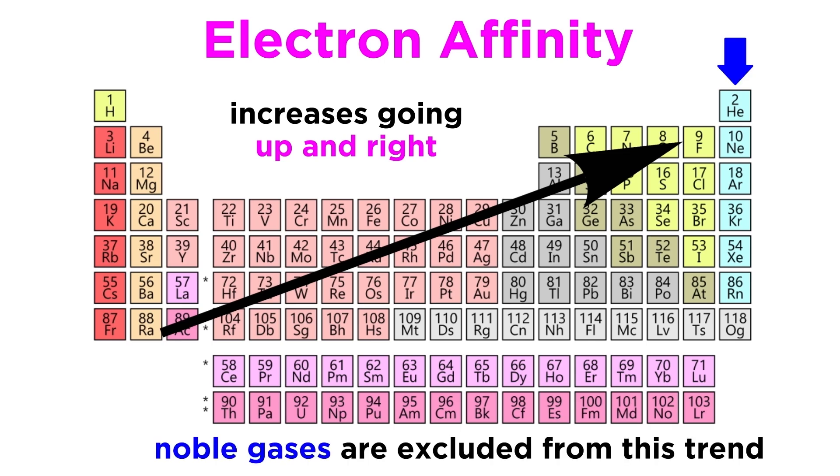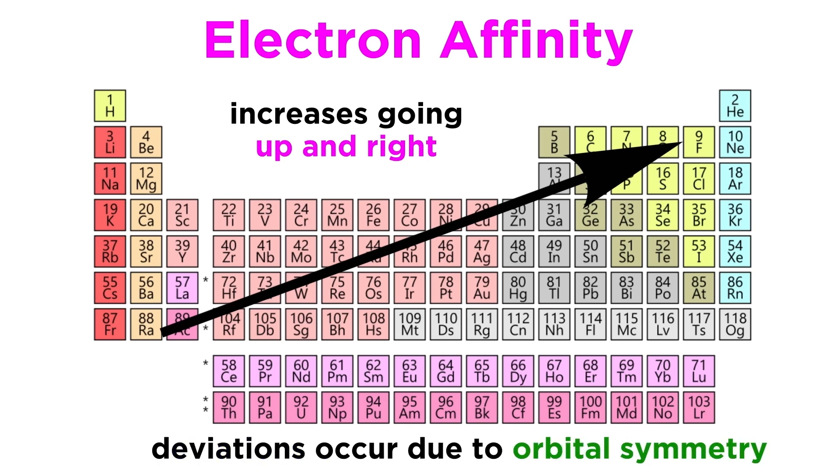Noble gases do not follow this trend, as with a full shell of electrons, it's typically not favorable to add another electron, so we discount them when considering this property. Deviations from the electron affinity trend typically occur for similar reasons of orbital symmetry as we saw in the ionization energy trend.